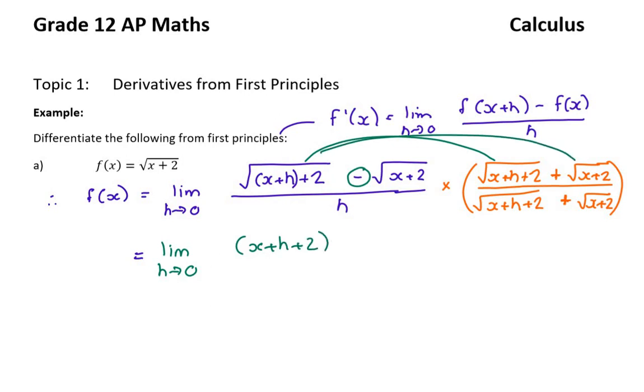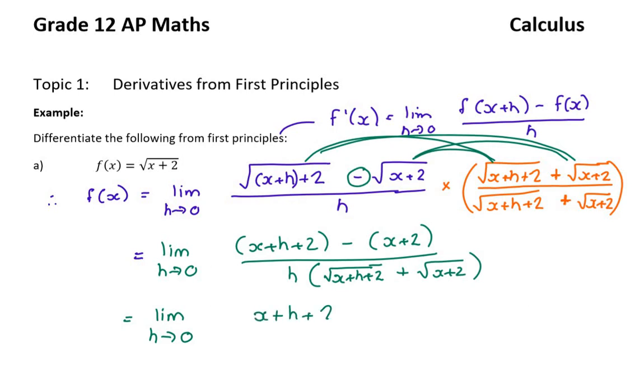I can't take the limit right now because there's an h in the denominator. So the question is, how do I get rid of these funny thirds? Well, I can multiply by the conjugate. When you multiply by that on the top, you need to multiply by this on the bottom.